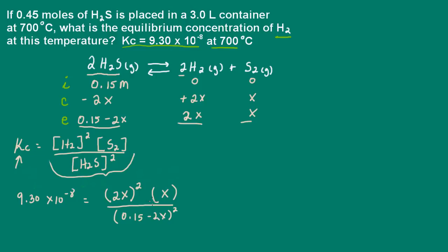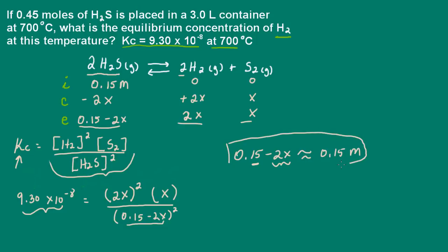We can make an assumption here. K is very small — it's 10 to the negative 8 — so I'm going to assume that 0.15 minus 2X is approximately equal to 0.15 molar. In other words, the change in concentration will be so small it won't significantly affect the initial concentration. A very small equilibrium constant means very little H2S will dissociate. We'll check this assumption in a moment.